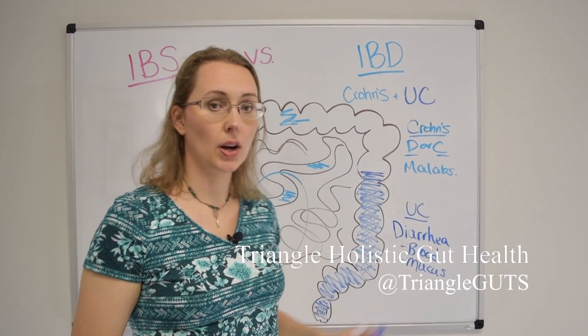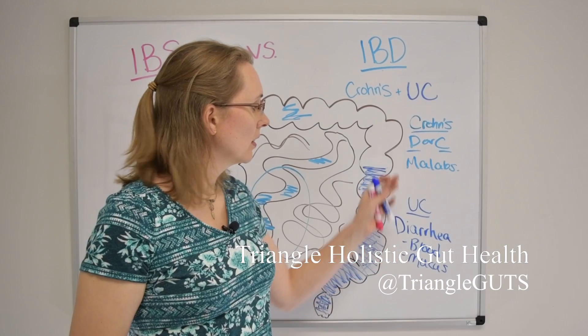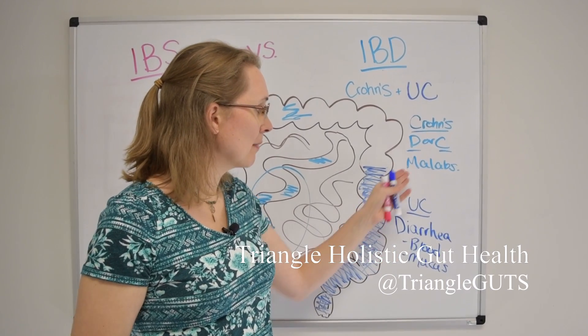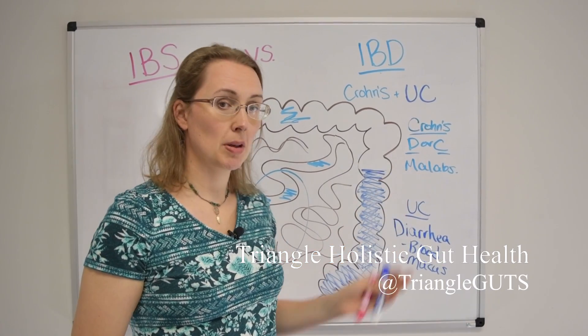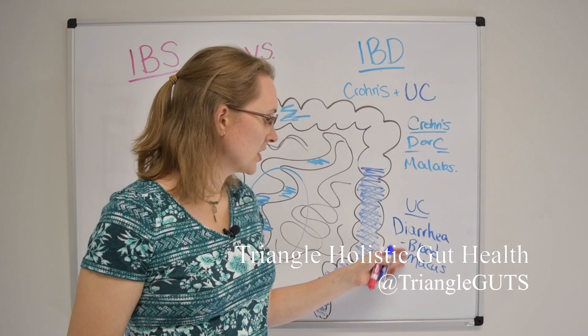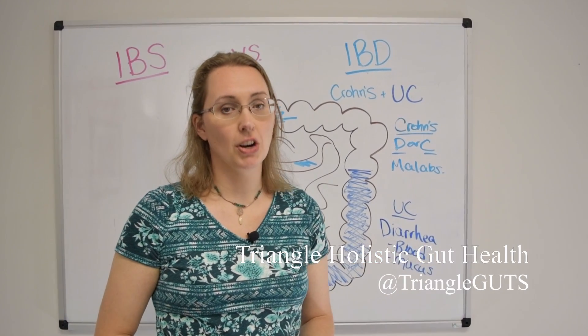Although again, with Crohn's you can have constipation. Malabsorption can run the gamut but really is going to be more prominent in Crohn's. And with UC, blood and mucus in the diarrhea is very common.